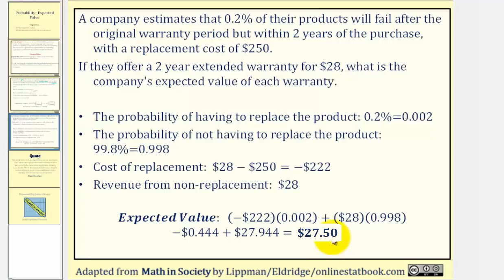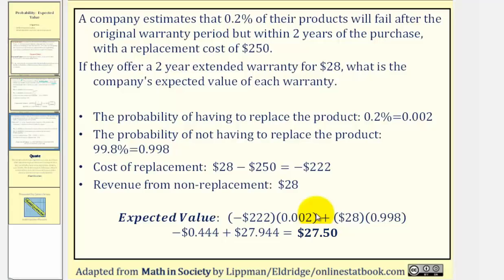Which means as the company sells more and more warranties, the expected value or additional revenue per warranty sold is $27.50. I hope you found this lesson helpful.